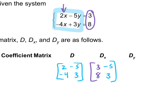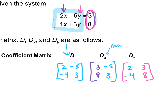In D sub Y, we put the answers in the Y column. So our answers, 3 and 8, go in the Y column. The rest of the matrix stays the same from the original coefficient matrix: 2, negative 4. So for D sub X, the answers go in X. For D sub Y, the answers go in Y.